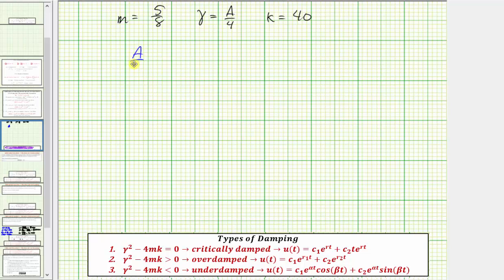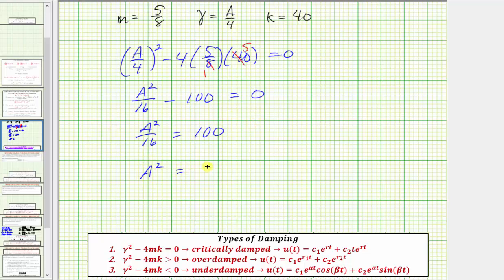Gamma squared would be the square of a divided by four minus four times m, which is 5 eighths, times k, which is 40, must equal zero, so we have a squared divided by 16, simplifying here before multiplying, there's one eight and eight, and five eighths and 40, so we have minus four times five times five, which is a hundred, equals zero, adding 100 to both sides, we have a squared equals 1,600. Remember a is the force in pounds, so now we take the principal square root of both sides of the equation, and we have a equals 40, and the units here would be pounds.